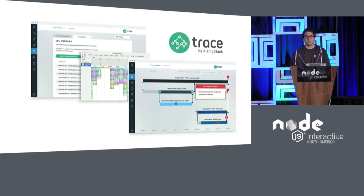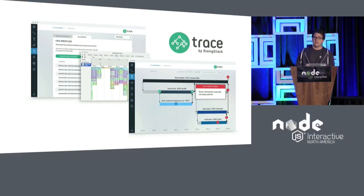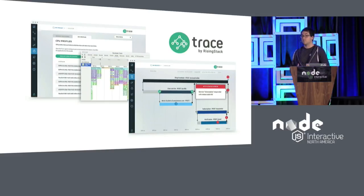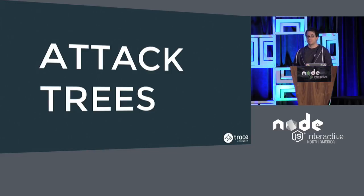At Trace we are dealing with a lot of sensitive information, whether they are CPU profiles, memory heap, or stack traces. Our customers trust us with sensitive information. This is why security is one of our topmost priorities when building Trace. But when we are working on security at Trace, it's really hard to figure out what kind of attack vectors we should protect our application against. So when we do that, we usually use attack trees, and this is the methodology I want to show you today.